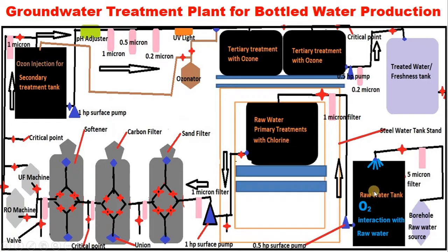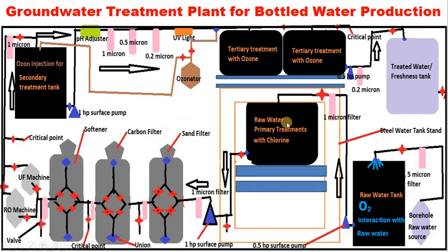Once aeration is complete, the water is pumped out with a 0.5 horsepower surface pump. The water moves straight through a 1-micron filter, which removes debris from the oxidized water. Particles below 1 micron flow through into the next tank, where primary chemical treatment begins.